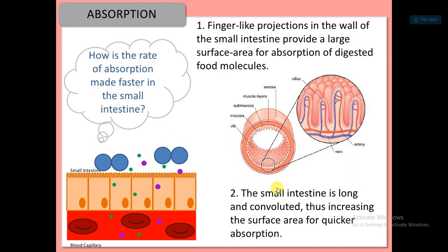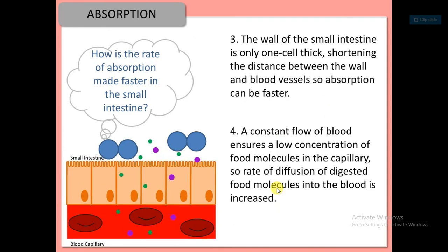How is the rate of absorption made faster in the small intestine? First, finger-like projections in the wall of the small intestine provide a large surface area for absorption of digested food molecules. Second, the small intestine is long and convoluted, increasing the surface area for quick absorption. Third, the wall of the small intestine is only one cell thick, shortening the distance between the wall and blood vessels so absorption is faster. Fourth, a constant flow of blood ensures a low concentration of food molecules in the capillary, so the rate of diffusion of digested food molecules into the blood is increased.